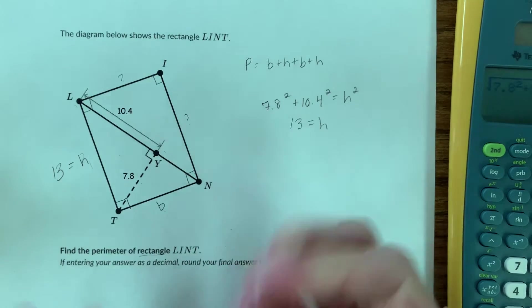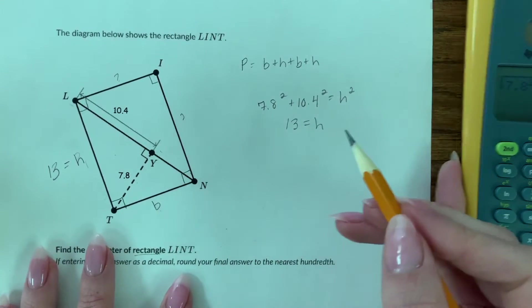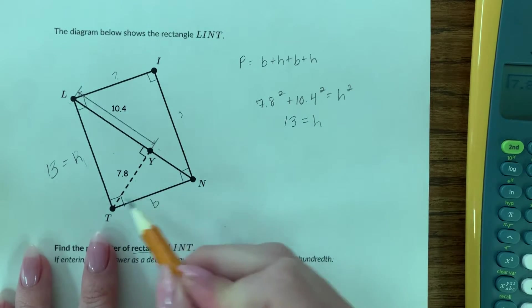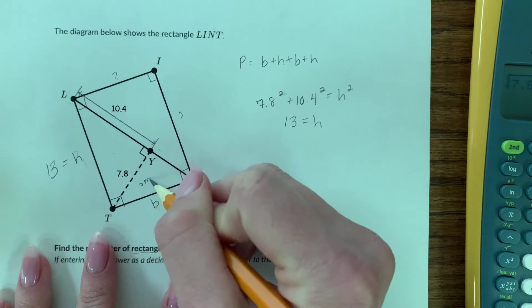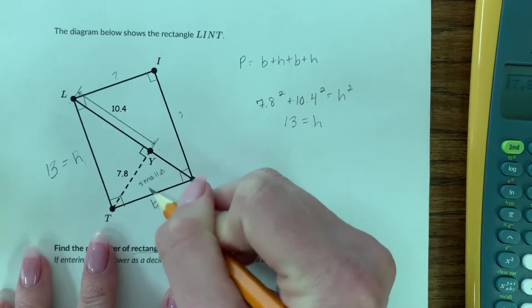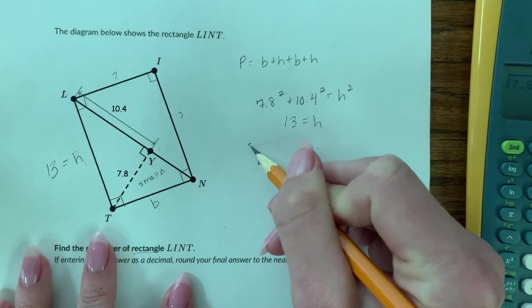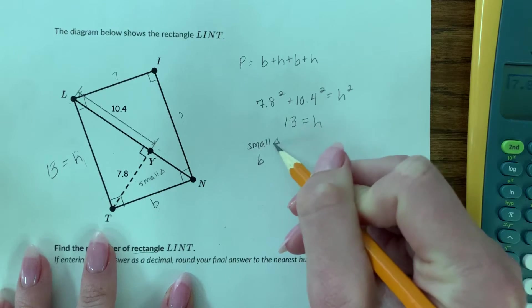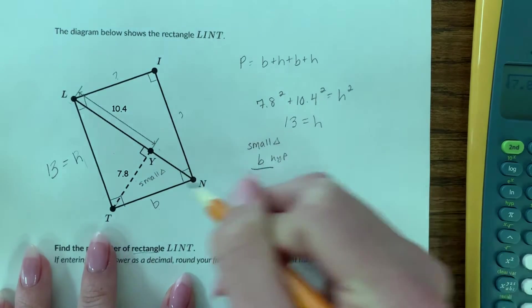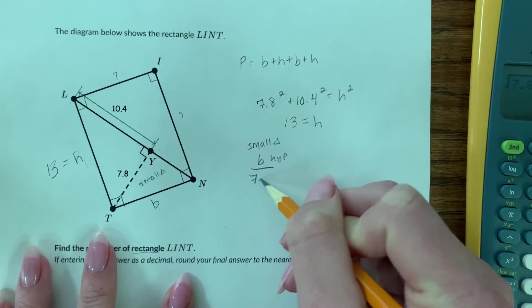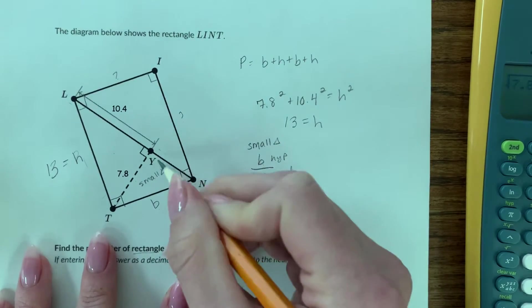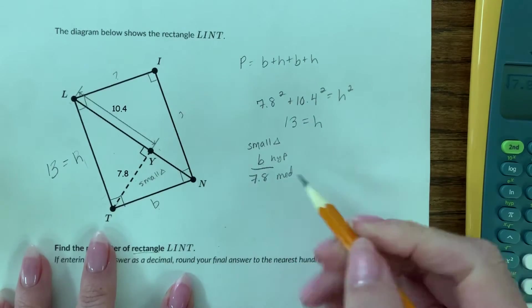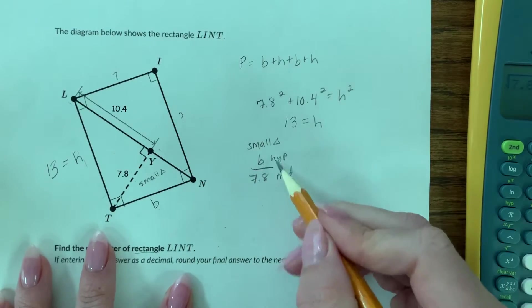We try to figure out, okay, so B is the hypotenuse of the small triangle. So for the small triangle, B is the hypotenuse and 7.8 is the medium side. You can see that this side is shorter, so this is the short side. All I have to do is make a proportion to compare that to another hypotenuse and medium side.